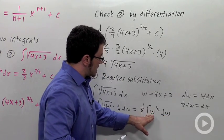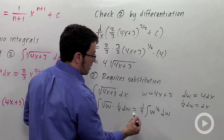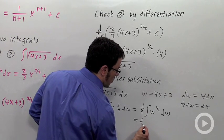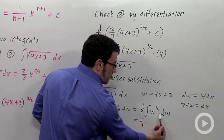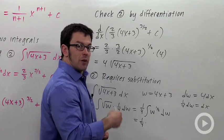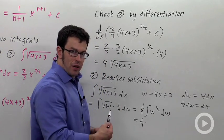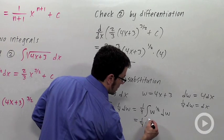Here, I do have just a simple variable raised to a power. So, it's 1 quarter. I have to raise the exponent by 1. So, 1 half becomes 3 halves. And then, dividing by 3 halves is the same as multiplying by 2 thirds.